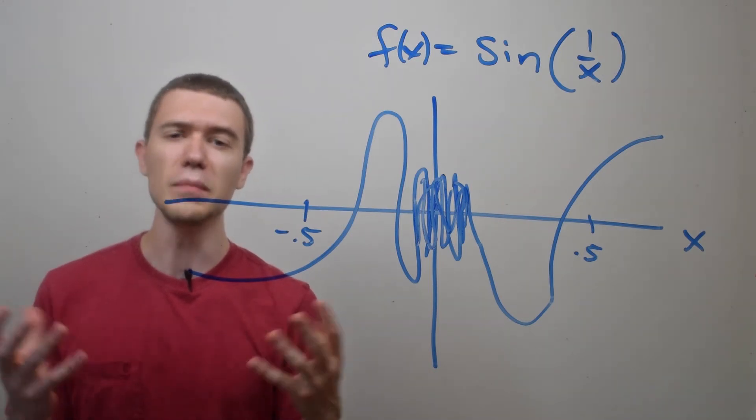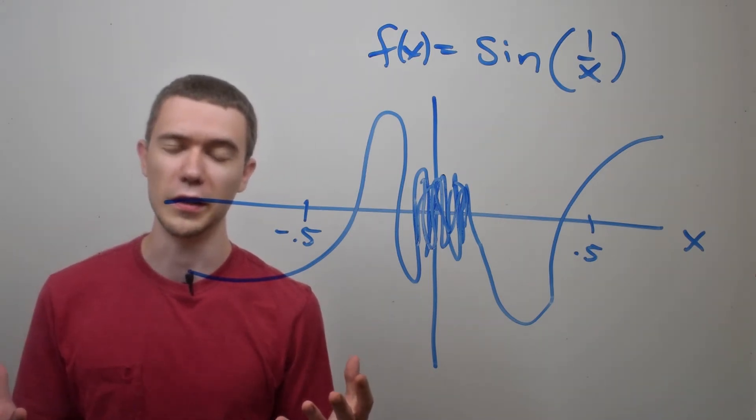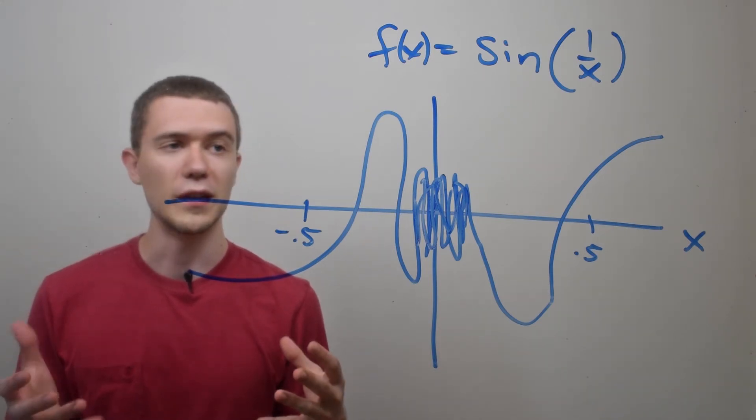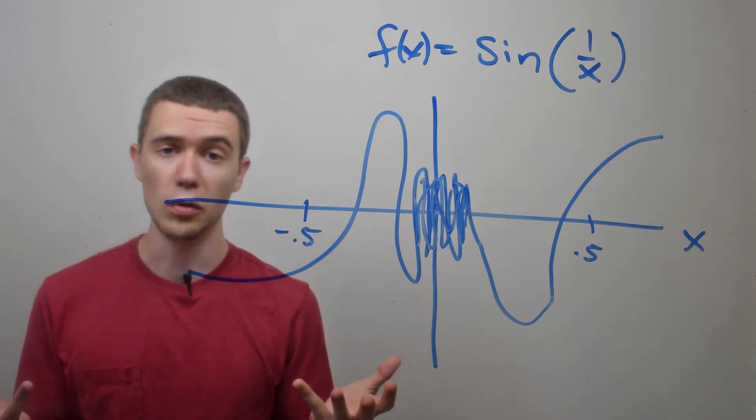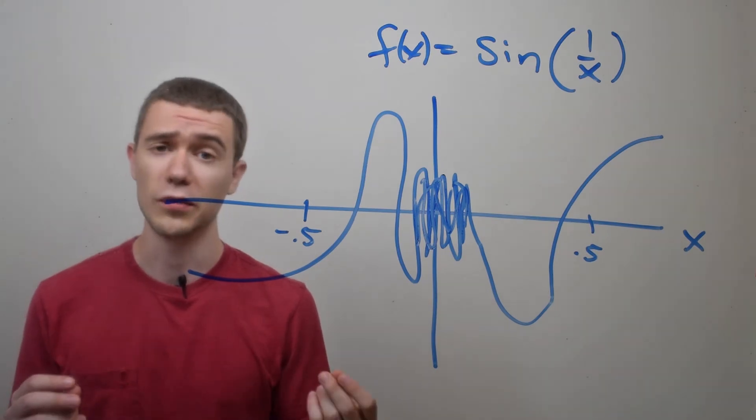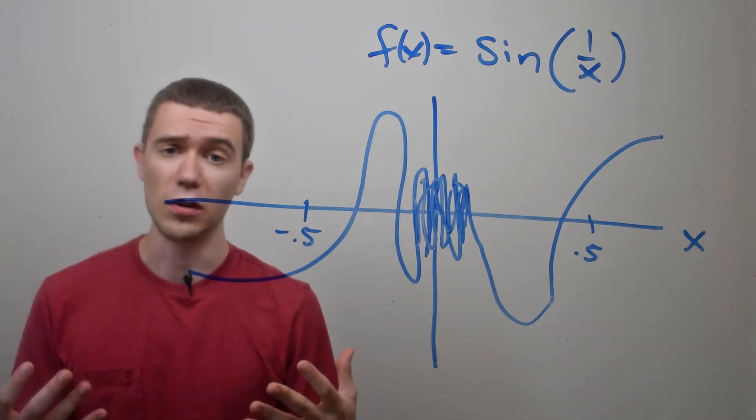But it's unlike the other discontinuities because this discontinuity is not removable. There's no way to remove this discontinuity. It's not a jump discontinuity because this isn't a piecewise function or any kind of function with a jump in it.